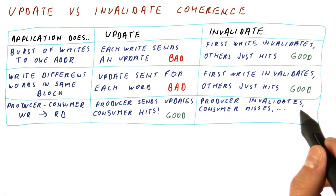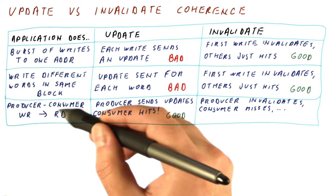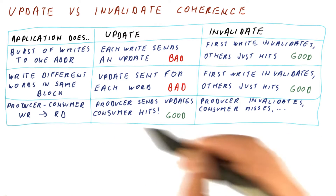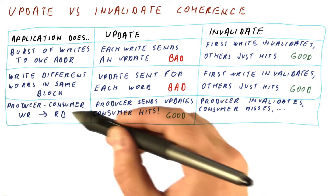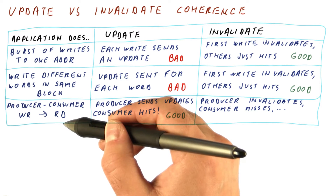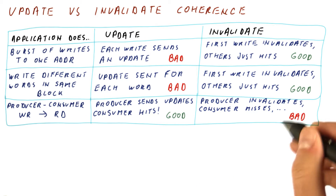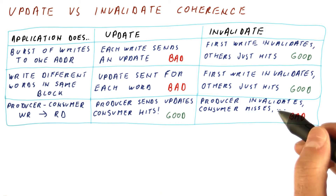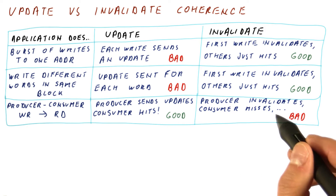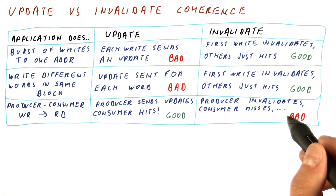In an invalidation-based protocol, however, the producer's write invalidates the reader's copy. So when the consumer wants to read, it's a cache miss and it has to get the data from the writer. Then a new write happens, invalidates the copy, and so on. This is about as bad as it gets for this scenario, because not only do we create bus traffic when we invalidate, we then have a cache miss and need another bus operation to get the data.